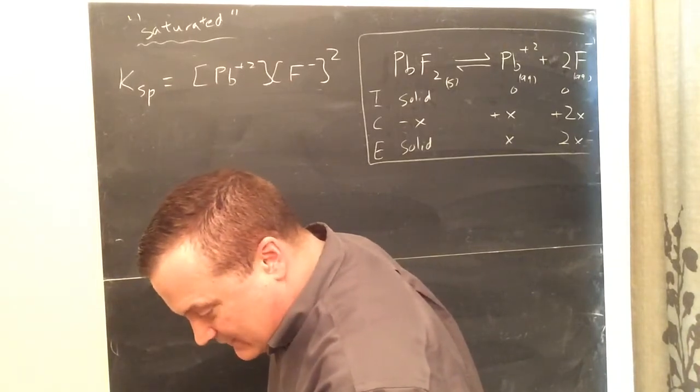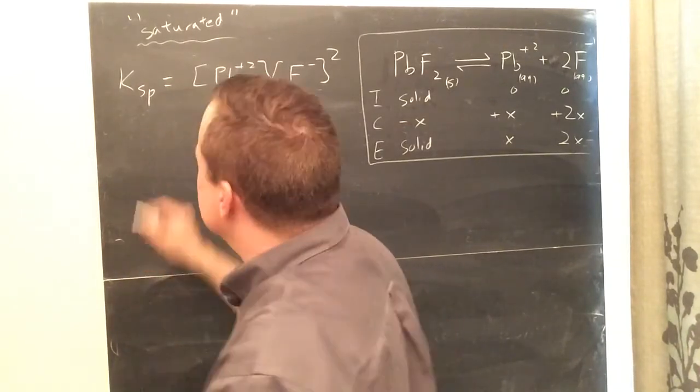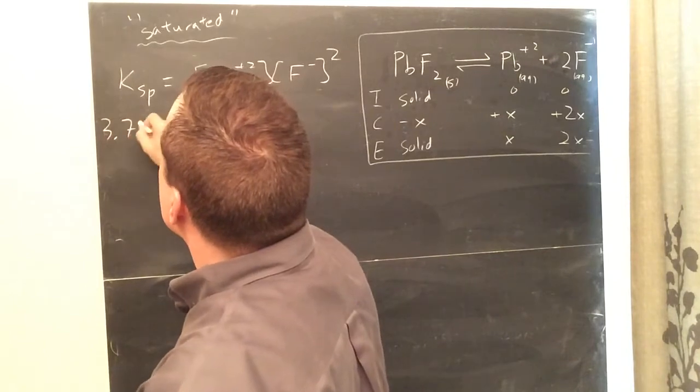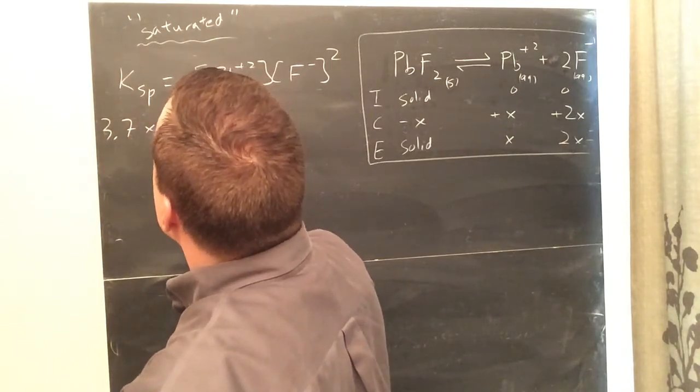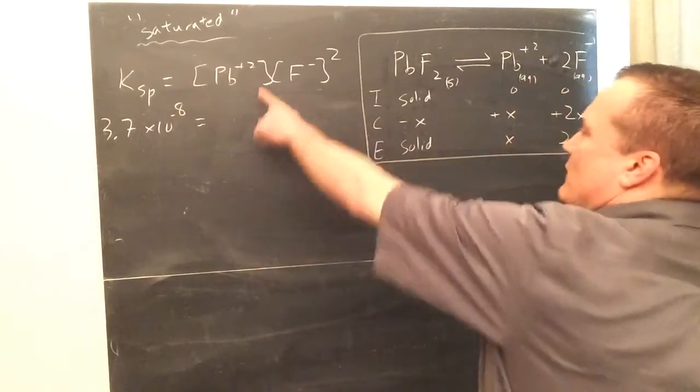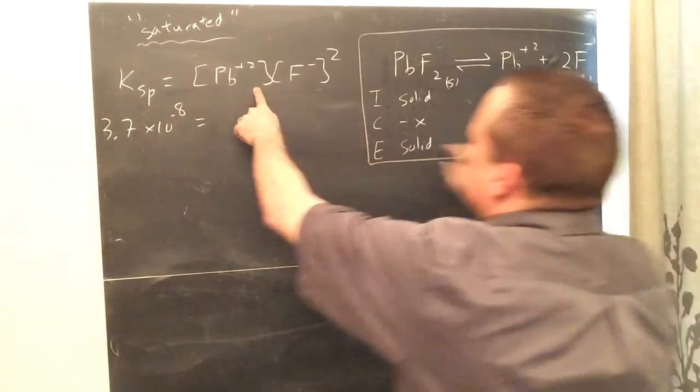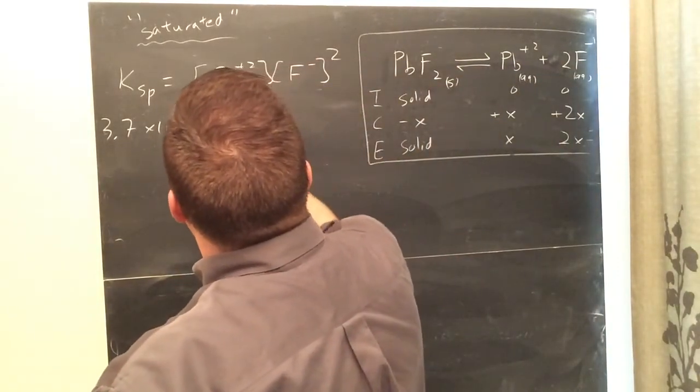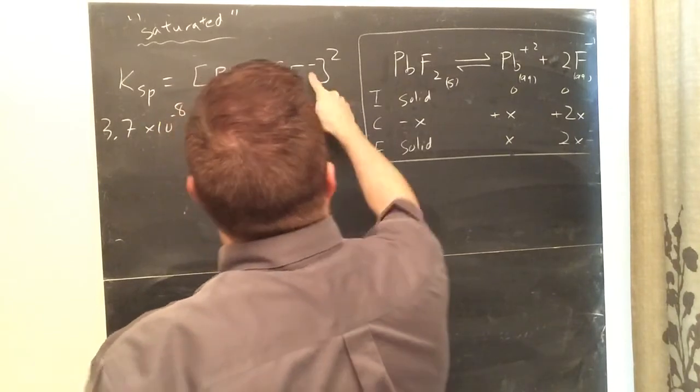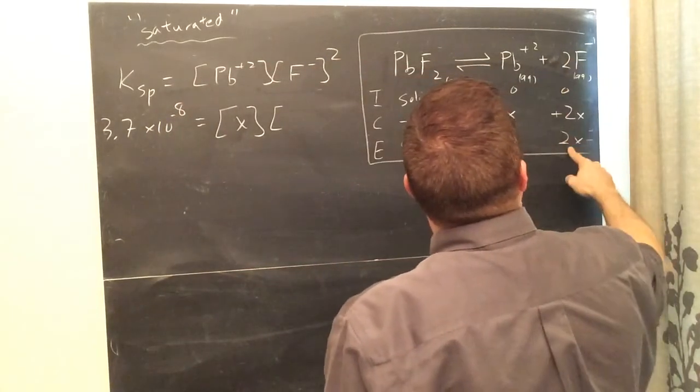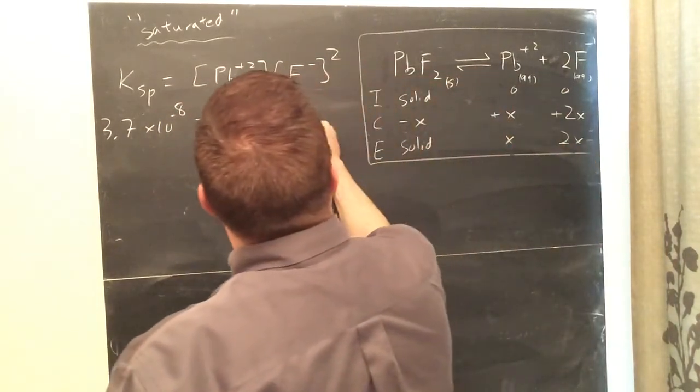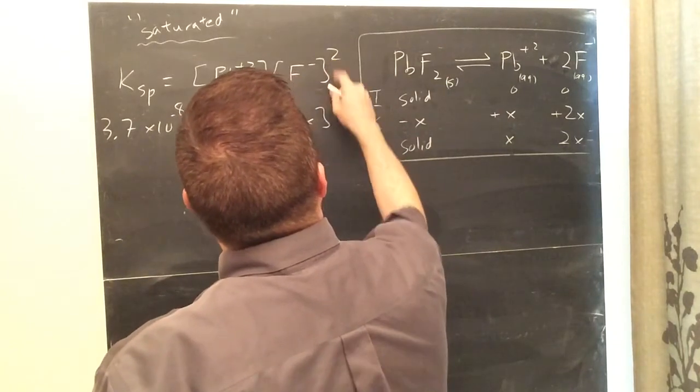So let's go over here and let's plug in for the KSP. The value is given to be, in the question, 3.7×10 to the negative 8. Now remember, at equilibrium, we're going to put them, what is Pb plus 2 at equilibrium? It's X.